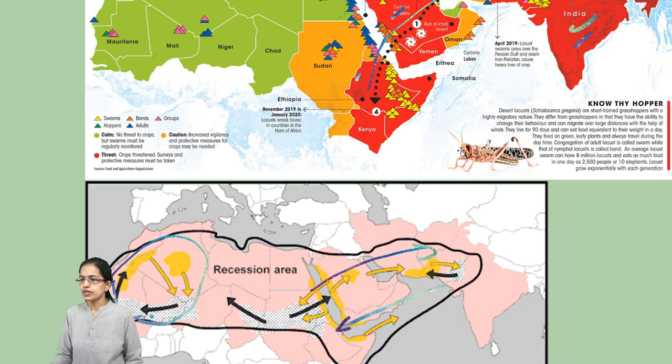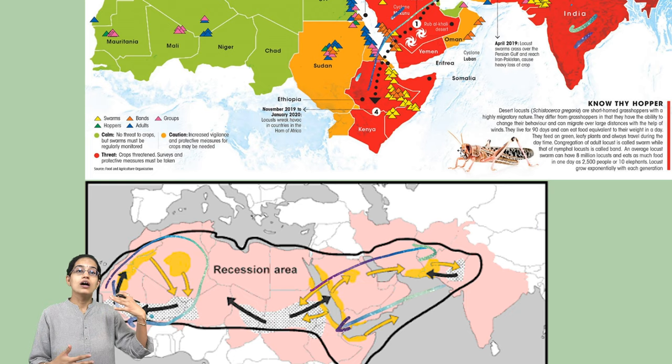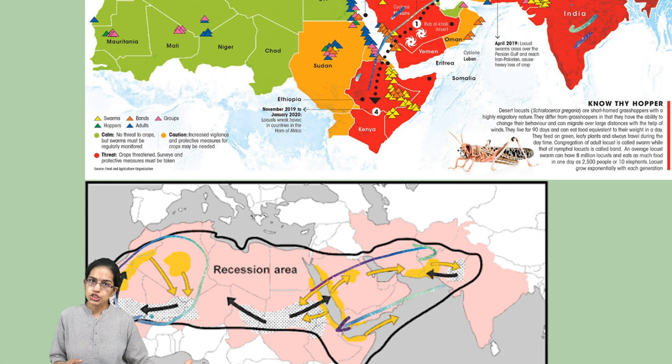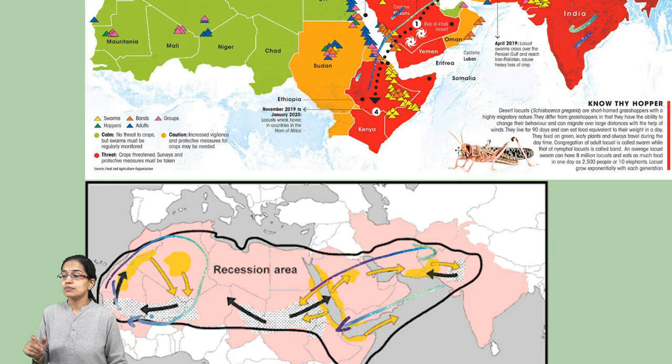These desert locusts are known for cannibalism. When they get food, they eat it, but in case they are not able to get a sufficient amount of food and are extremely hungry, they would start eating their own species or the members flying in front of them. They therefore depict cannibalism, which is a very important characteristic.